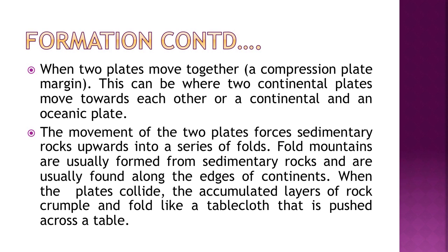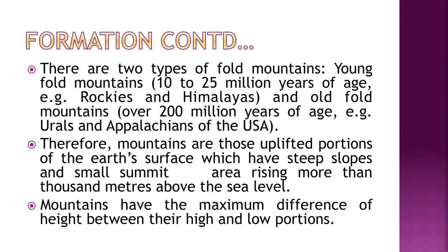Fold mountains are usually formed from sedimentary rocks along the edges of continents, because the thickest deposits of sedimentary rock generally accumulate there. When the plates collide, the accumulated layers of rock crumple and fold like a tablecloth pushed across a table. There are two types: young fold mountains, which are 10 to 25 million years of age like the Rockies and Himalayas, and old fold mountains, over 200 million years old, like the Urals and Appalachians of the USA.